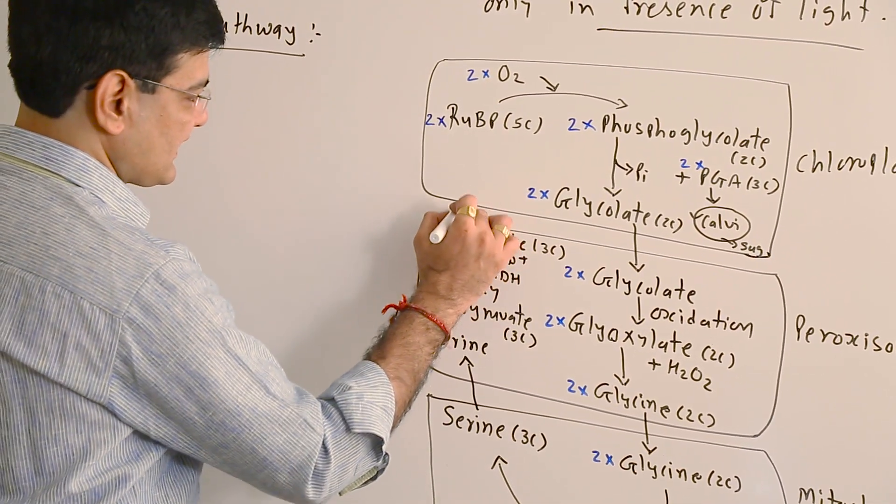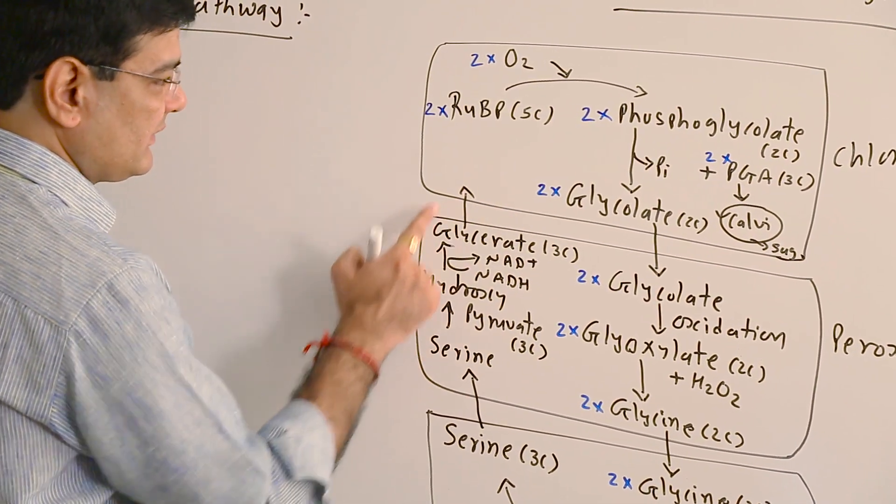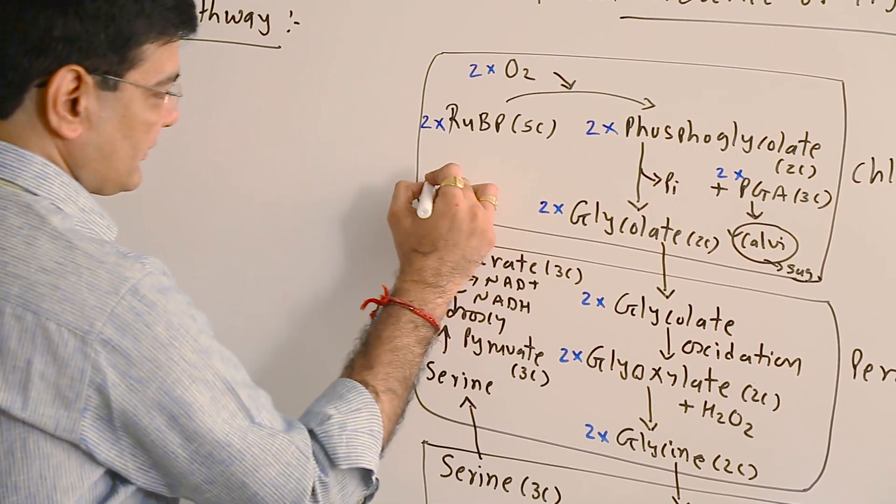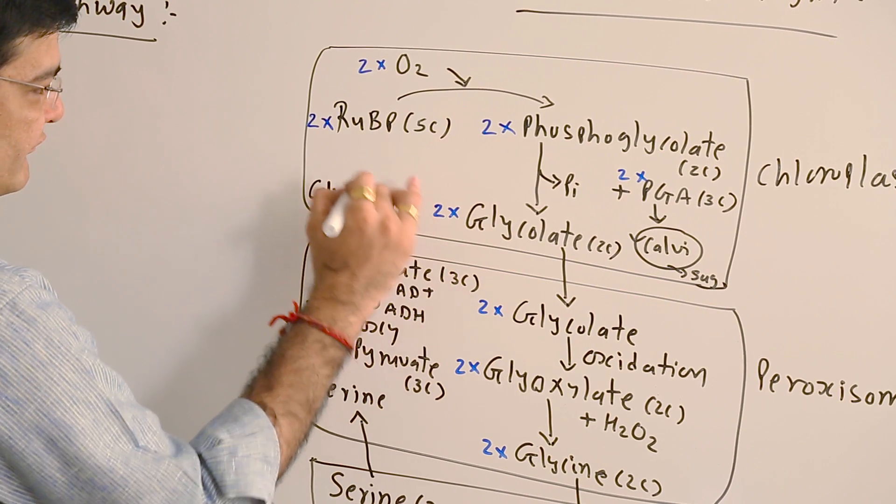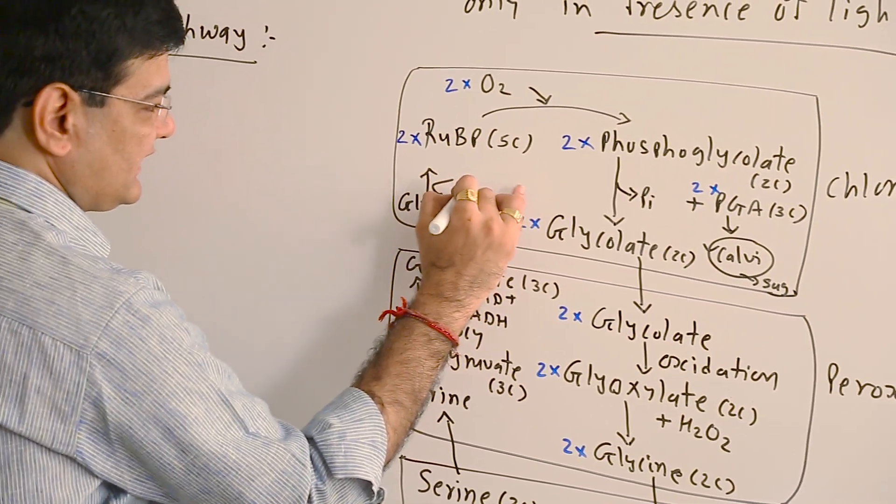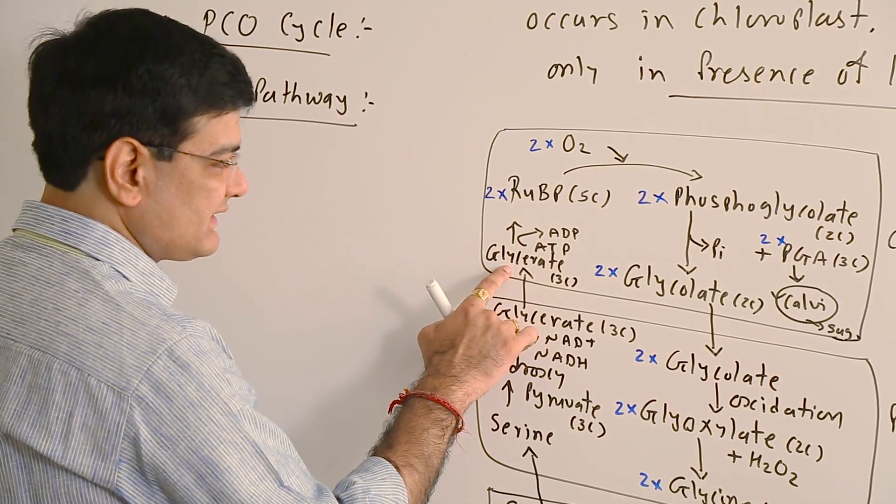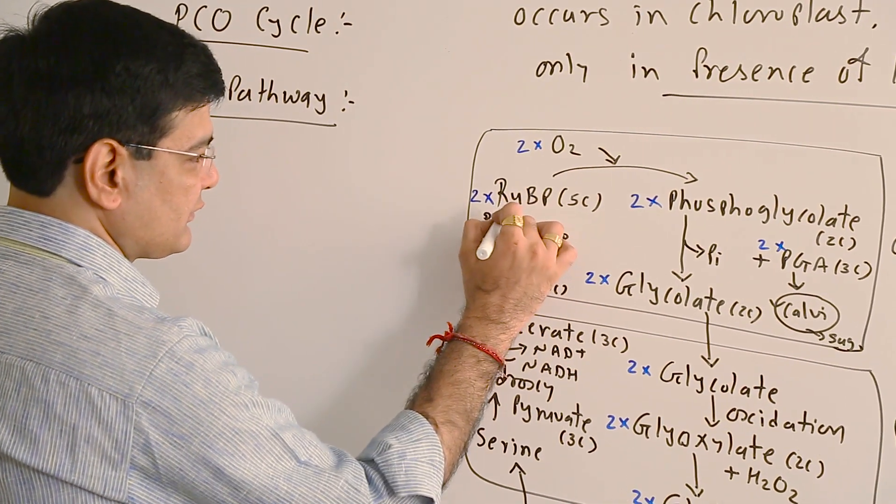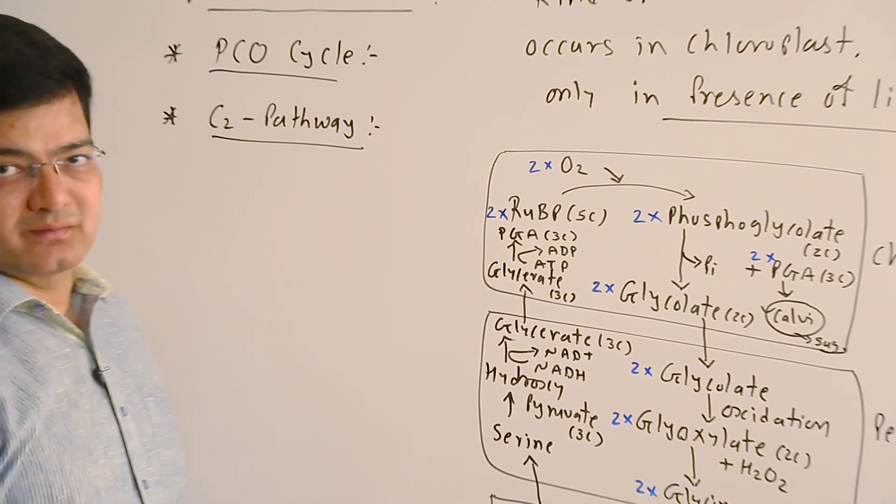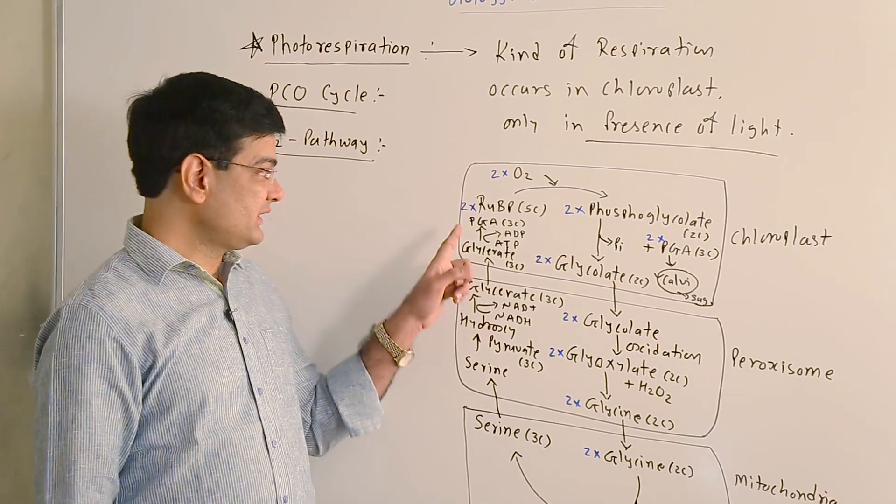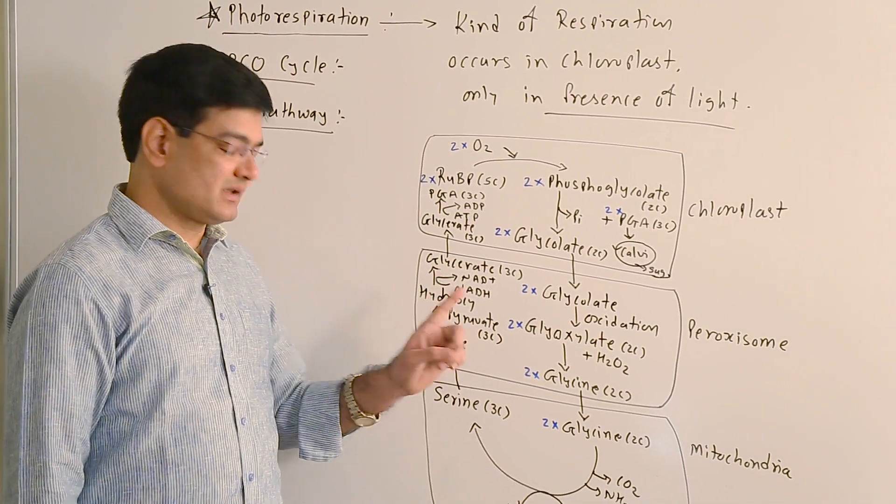Again, glycerate diffuses out from the peroxisome and enters into the chloroplast, which reacts with ATP, and phosphate is added into glycerate to form phosphoglycerate or phosphoglyceric acid. And when another PGA molecule forms, the entire process is completed.